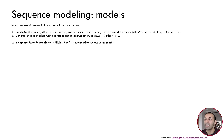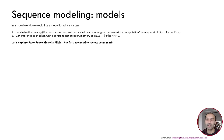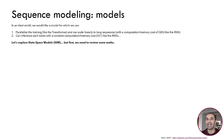In an ideal world we would like a model for which we can parallelize training just like the transformer, and which scales linearly to long sequences just like the RNN. We would also like to inference each token with constant memory and computation cost, meaning the effort to produce the first token should be the same as for the 10th or 100th token. Now let's explore state space models and how they can help us solve these problems, but first we need to review some math.